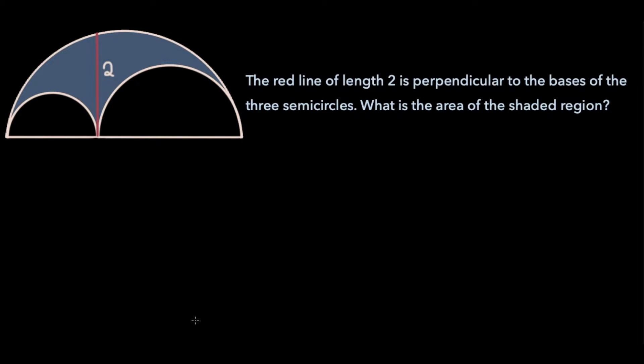In this video, we will be going over the following problem. The red line of length 2 is perpendicular to the bases of 3 semicircles. What is the area of the shaded region?